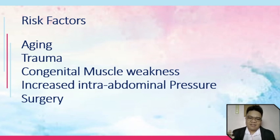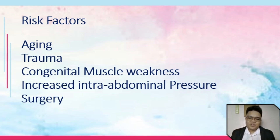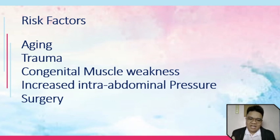Then there is congenital muscle weakness. Your diaphragm is a muscle, so whenever there is weakness of that muscle, there is a tendency for the stomach to prolapse upward. Then increased abdominal pressure is also a risk factor. Surgery is another cause — there are surgeries that may cause weakening of the muscles of the diaphragm, or repairs that can cause increased pressure in the abdomen.